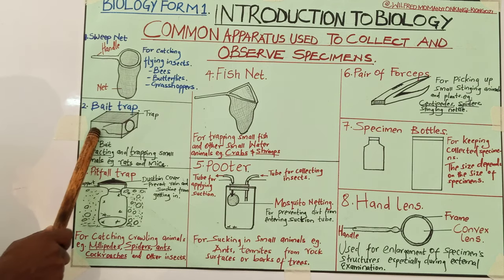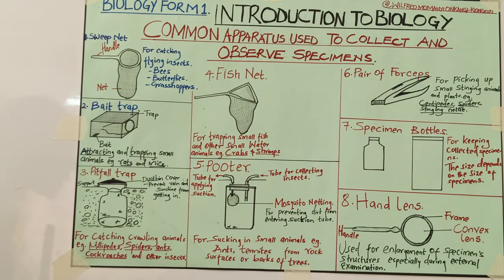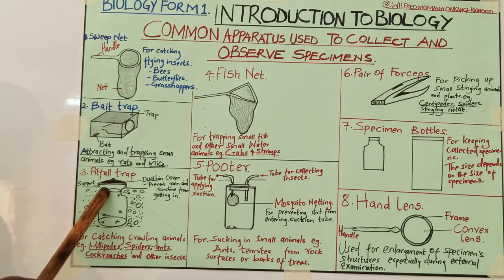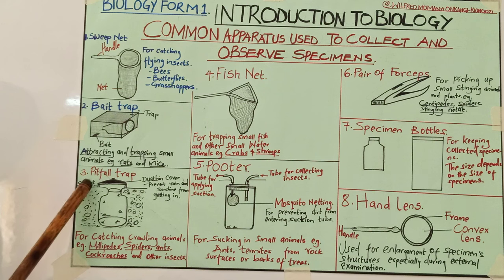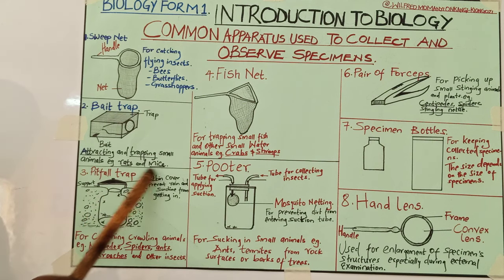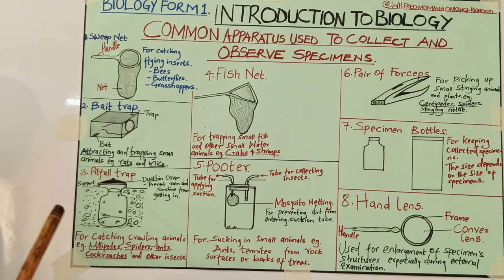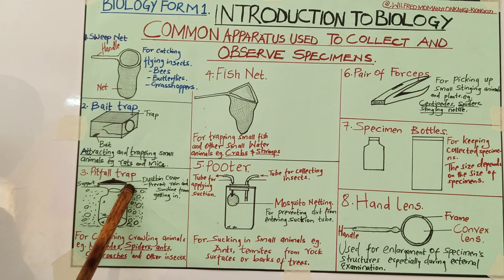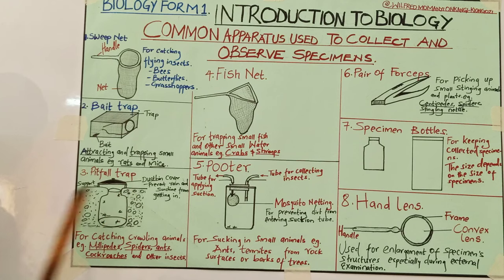That is why there is a section for the bait at that corner. The third apparatus is the pitfall trap. There is what we call a dustbin cover. This is a hole that has been drilled, and then a kind of bottle is put underground. Then there is a dustbin cover on top of that hole, which has some kind of container for collection of specimens. The dustbin cover has supports on both sides.